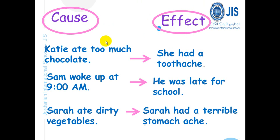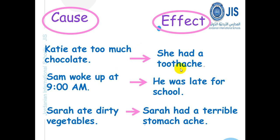I will give you some examples and later you will guess what are the meanings of cause and effect. The first example: Katie ate too much chocolate. So, what happened? She had a toothache.